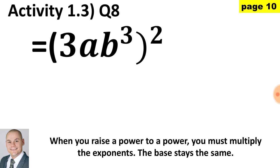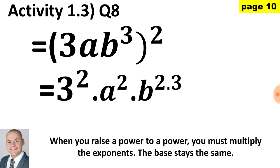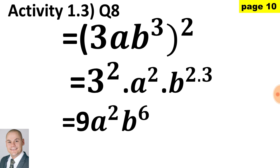Here in question 8, once again we have a coefficient of 3 raised to the exponent of 2, and our power of a to the 1 and b to the 3 raised to the exponent of 2. Therefore, a to the 2 and b — 2 times 3 simplified — 3 squared gives us 9, a squared and b to the 6.